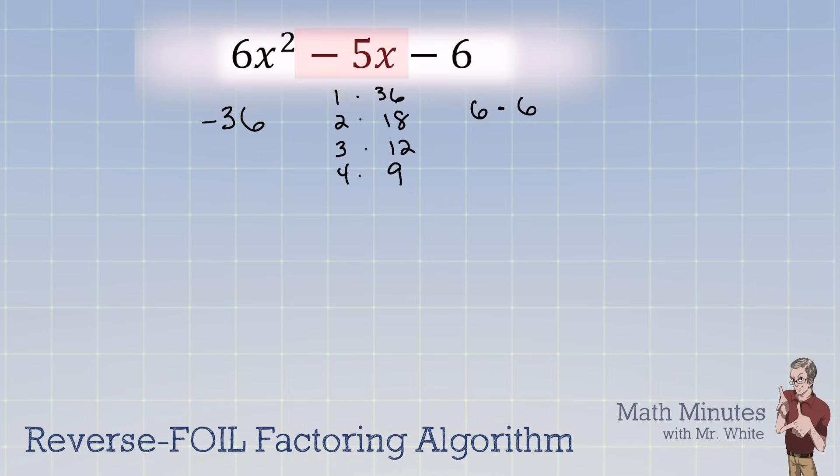So which of these add up to negative 5? And it's the 4 and the negative 9. So I'm going to split that up into 4x minus 9x. Bring down that first term. Bring down that last term. Now, do the grouping method.